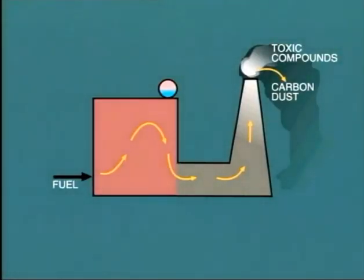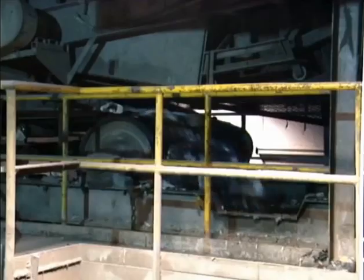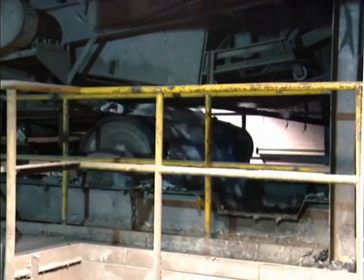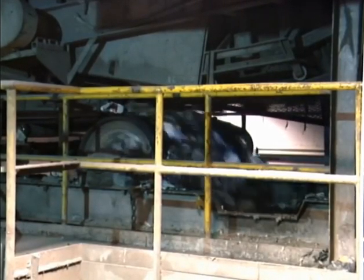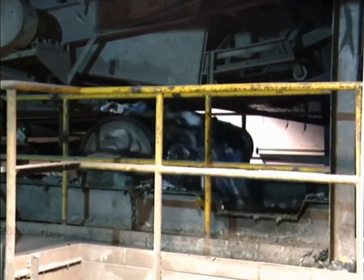The particulate matter may include certain toxic compounds which are formed from small quantities of metals contained in the fuel ash, such as lead, chromium, nickel, and others. This problem may be more severe if the boilers are burning municipal refuse and industrial waste.